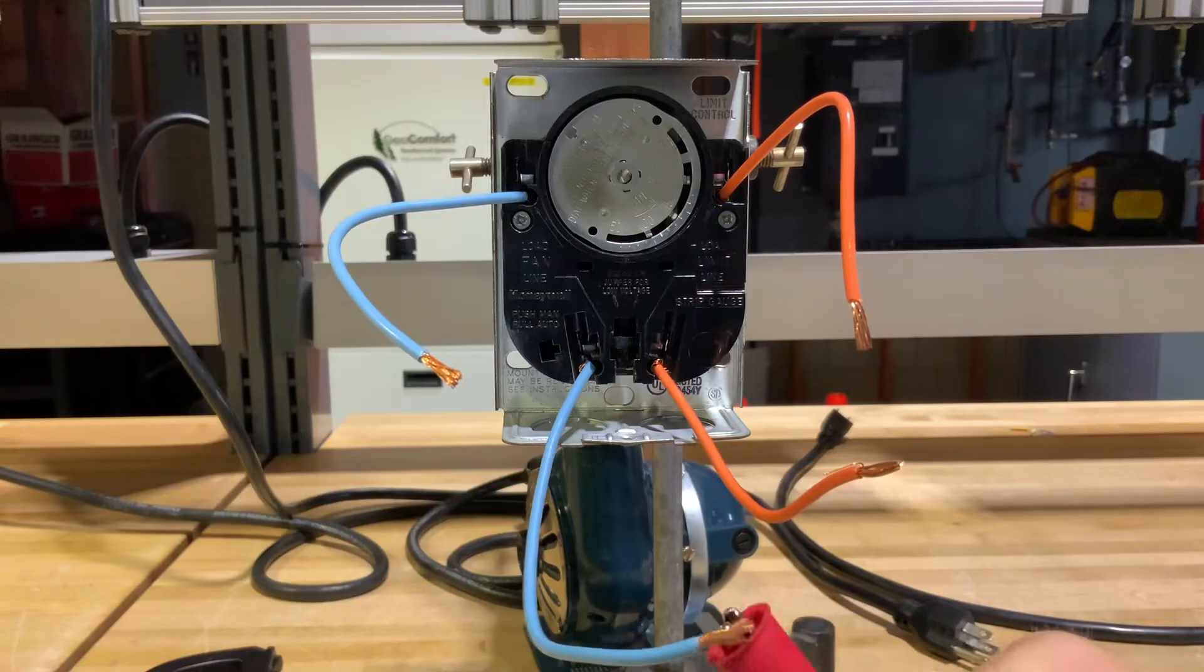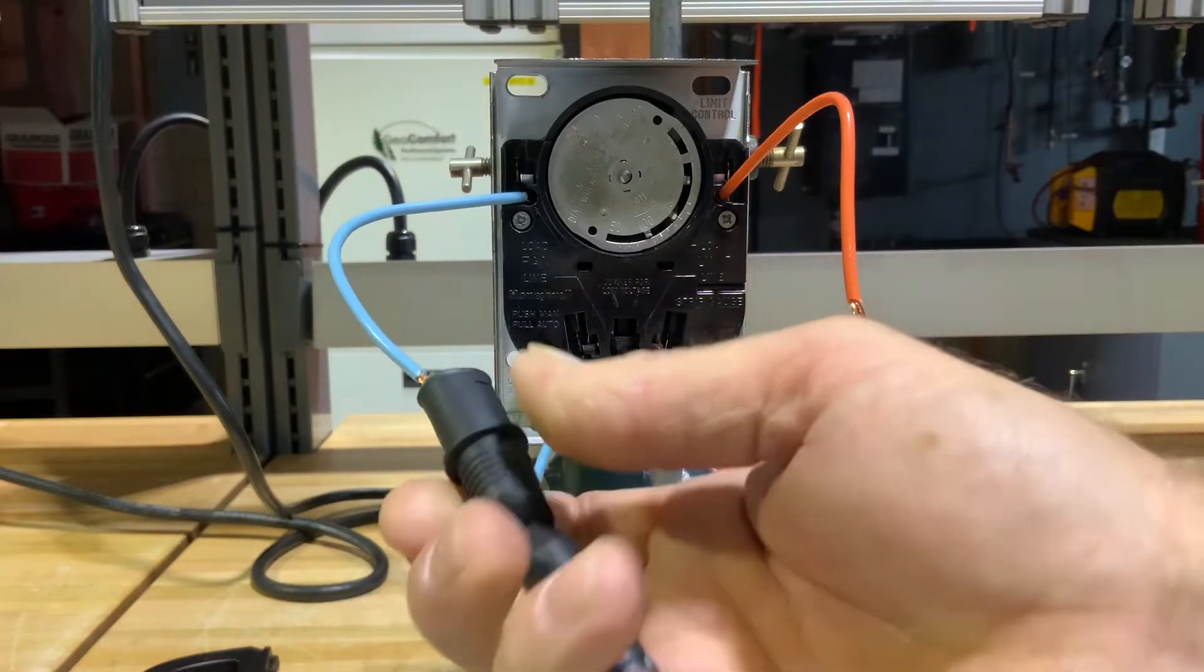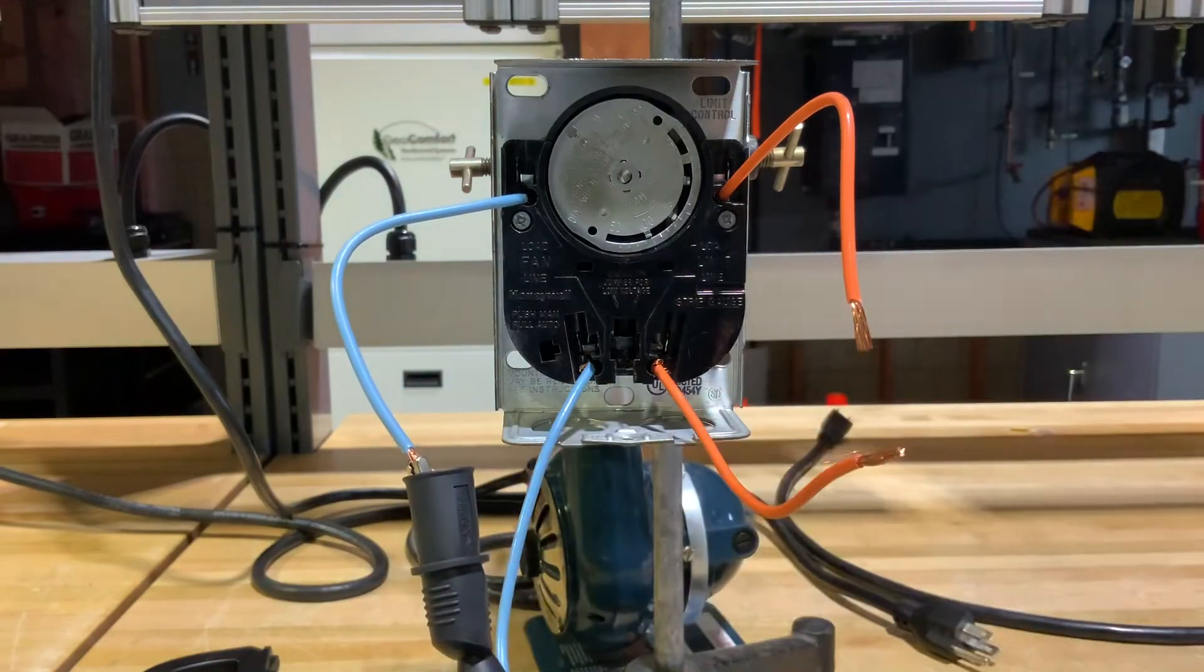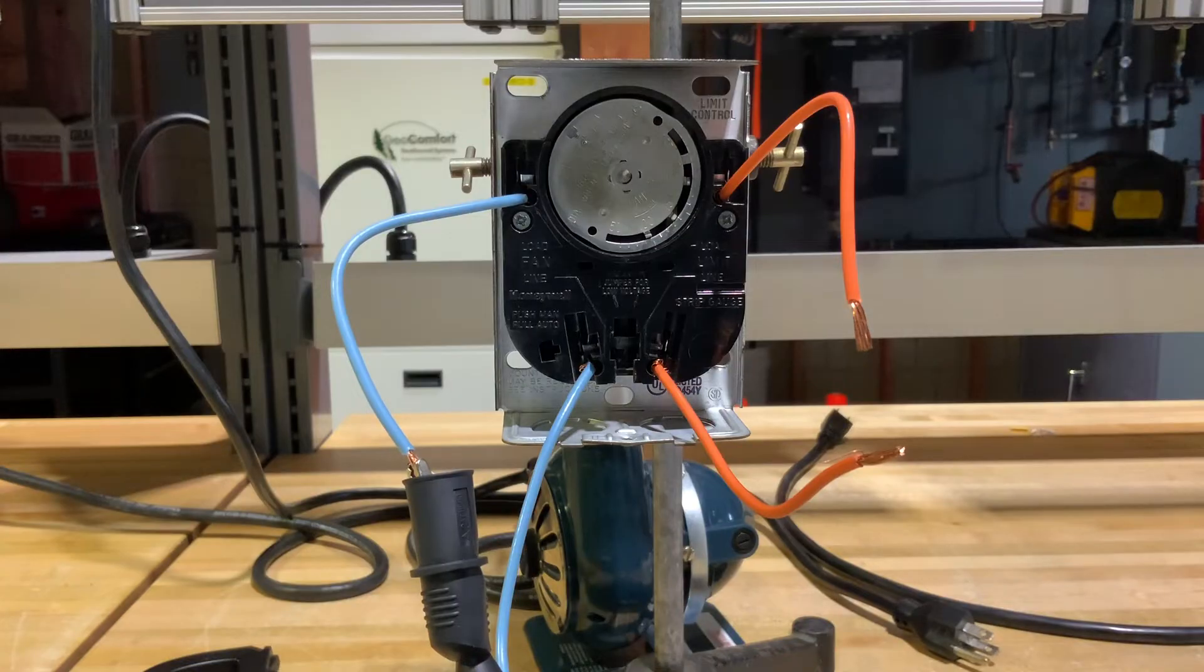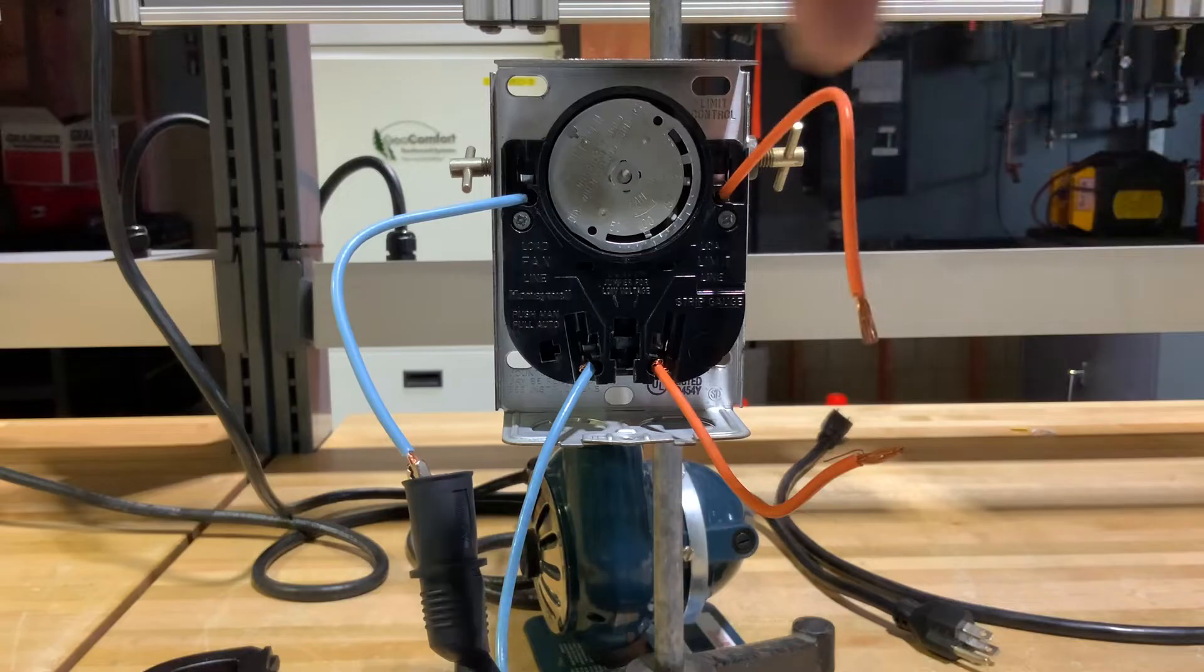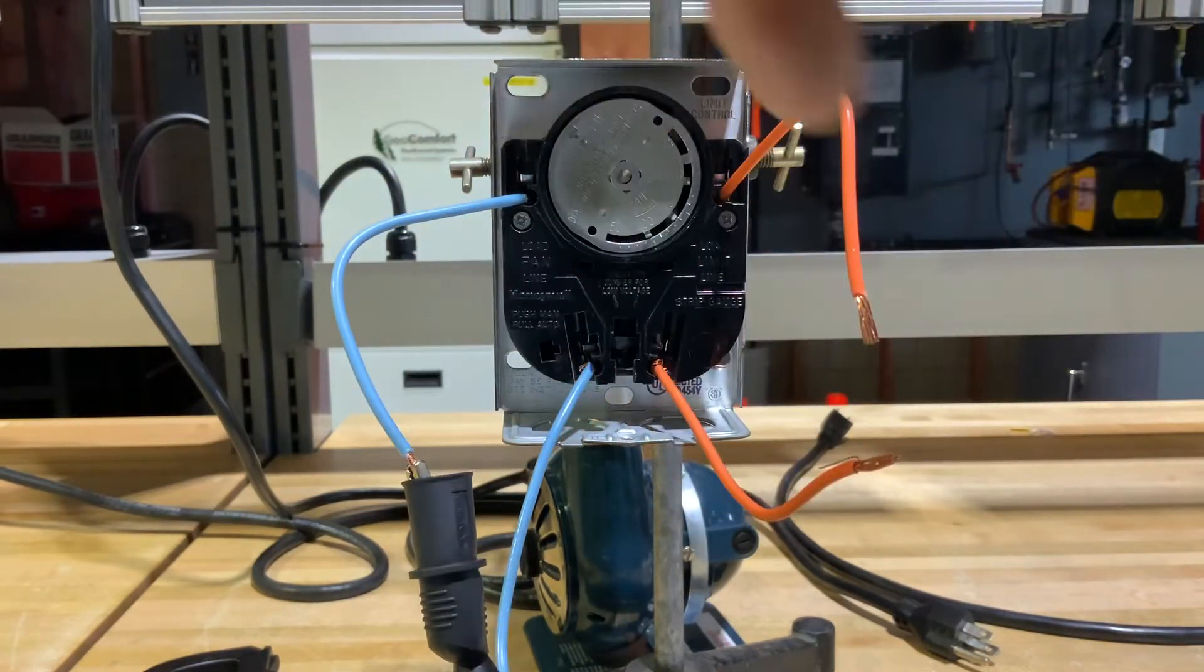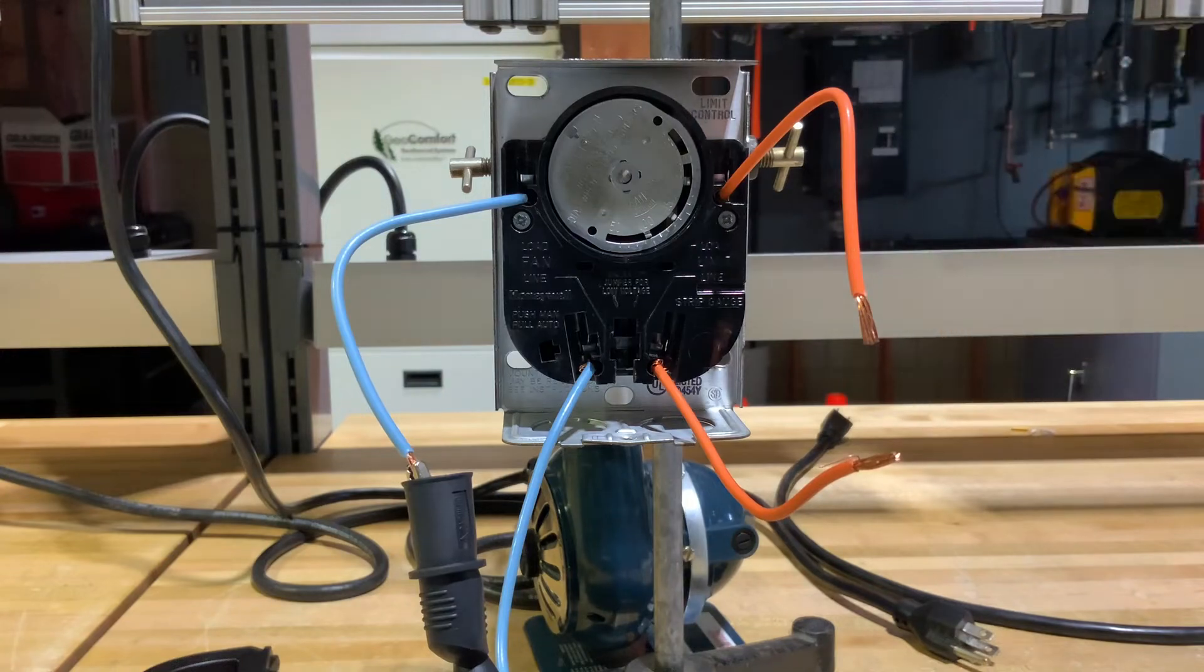If I check the fan side of it, we have no continuity through the fan side. So from the circuit breaker, power comes into our limit, goes out of our limit. From here it goes to power up our primary control unit.